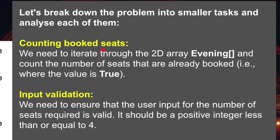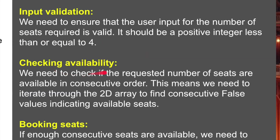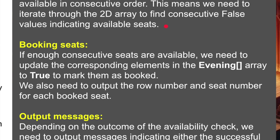Let's break down the problem. We're going to be counting the booked seats - we need to iterate through the 2D array 'evening' and count the number of seats that are already booked, i.e., where the value is true. We then need input validation to ensure the user input for the number of seats required is valid - it should be a positive integer less than or equal to four, so one, two, three, or four. Checking availability: we need to check if the requested number of seats are available in consecutive order, meaning we iterate through the 2D array to find consecutive false values indicating available seats.